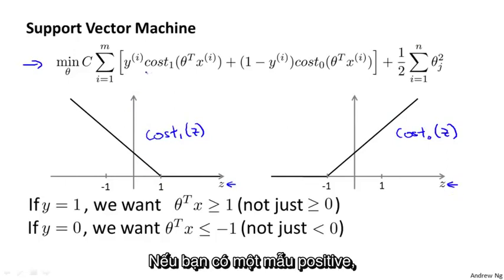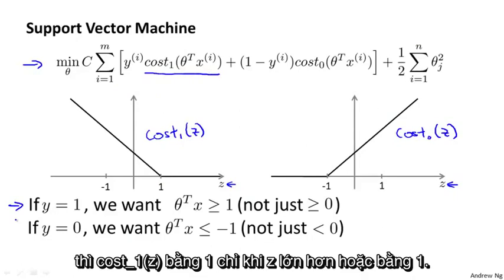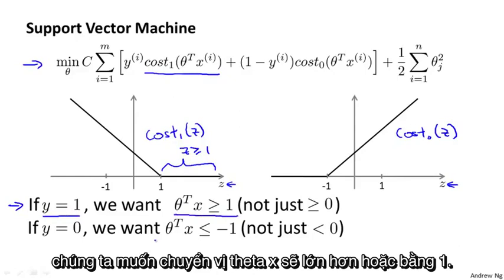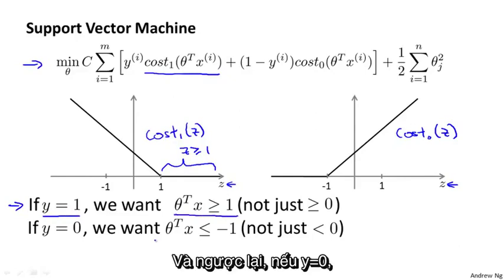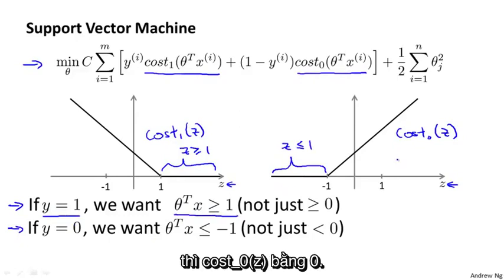If you have a positive example, so if y equals one, then cost-one-of-z is zero only when z is greater than or equal to one. In other words, if you have a positive example, we really want θᵀx to be greater than or equal to one. Conversely, if y equals zero, the cost-zero-of-z function is zero only in the region where z is less than or equal to negative one.